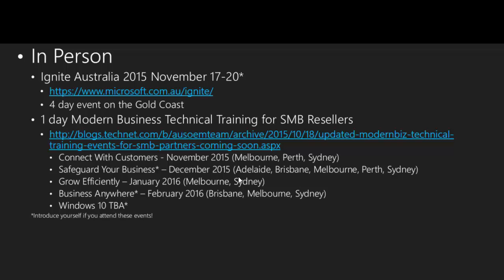That brings us to an end for the Windows 10 related content in this update. Upcoming events include the Microsoft Ignite event on the Gold Coast, November 17 to 20, and a series of one-day modern business events running around the country starting in November: Connect with Customers focused on CRM Online, Safeguard Your Business focused on security technologies in Windows 10, Windows Server and Cloud Services, and Grow Efficiently and Business Anywhere events in January and February. Windows 10 one-day training is also coming up, pending final updates.